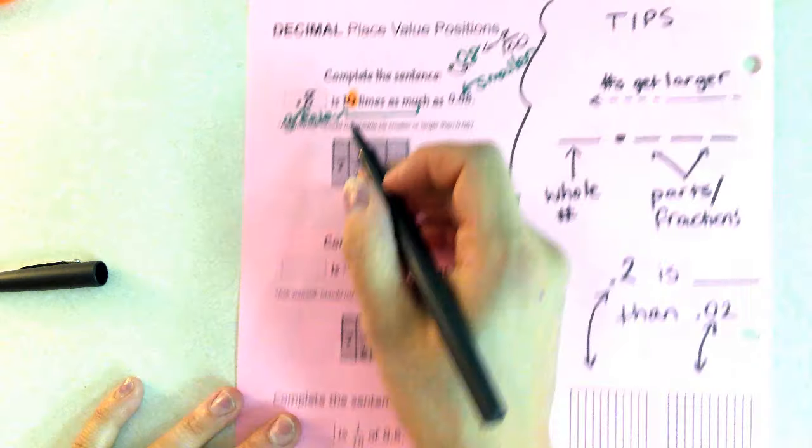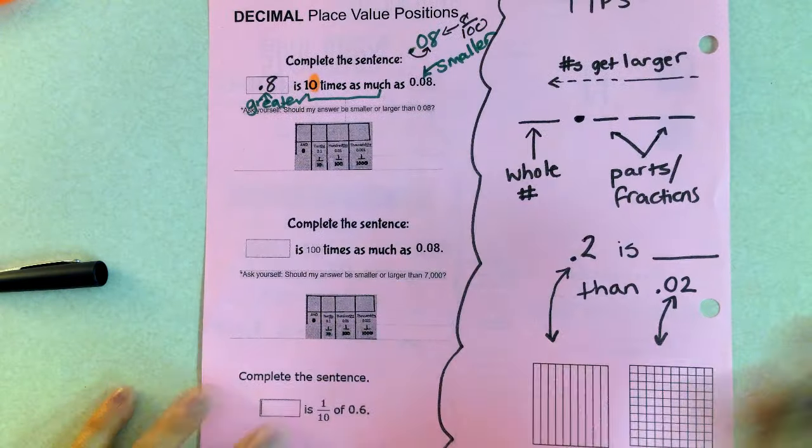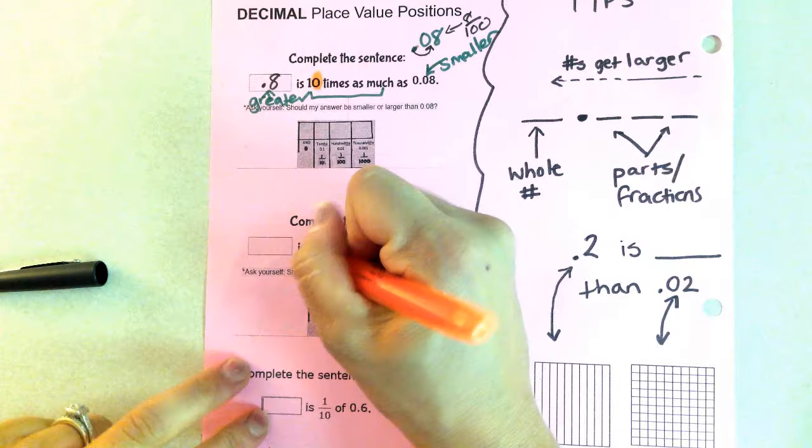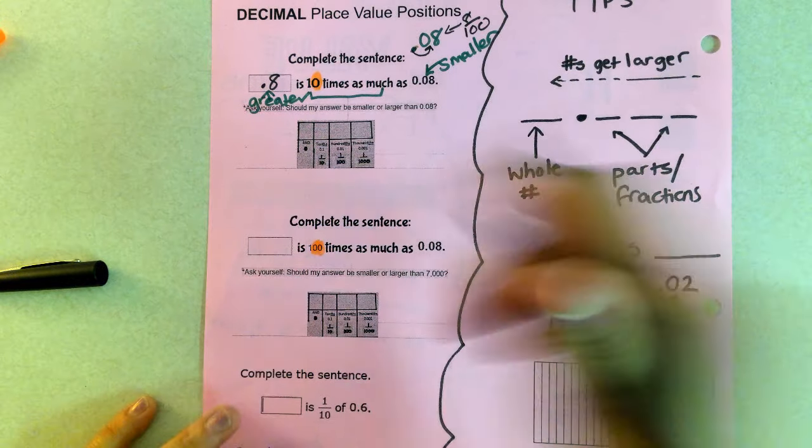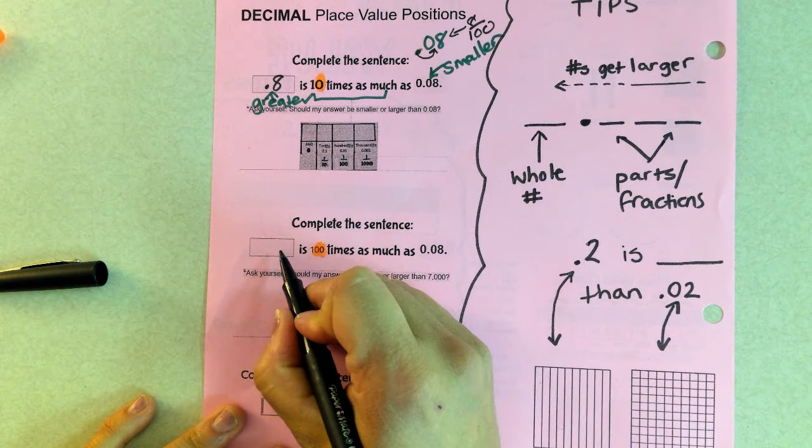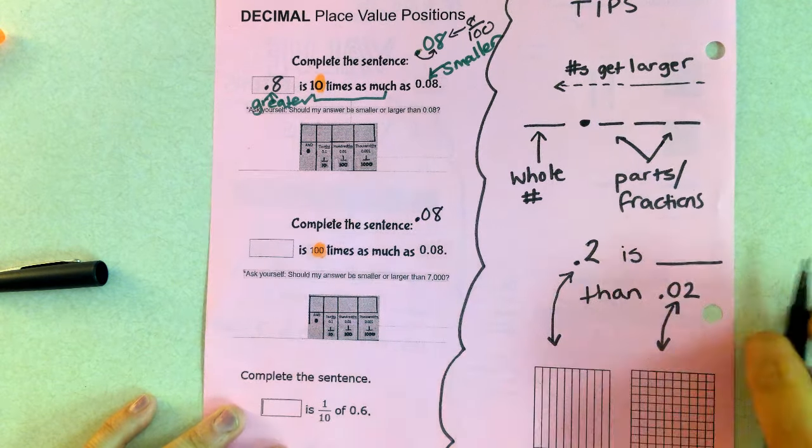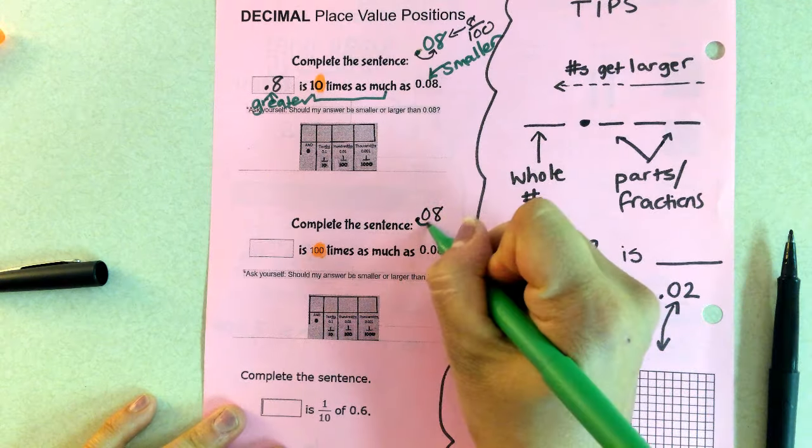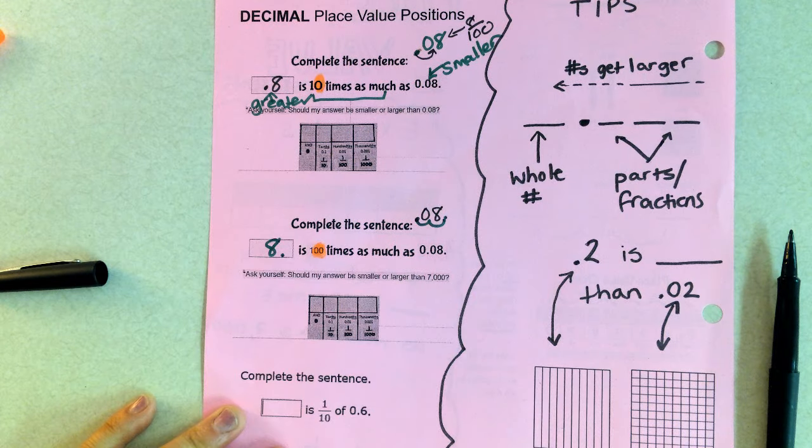If we look at the example underneath, it's the exact same thinking, except this time it's 100 times as much. So I am still wanting this to be greater and I still want this to be smaller. But this time I'm going to move my decimal twice. So I got 1, 2, which makes it 8 wholes.